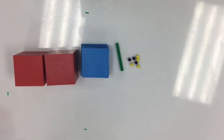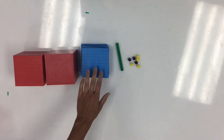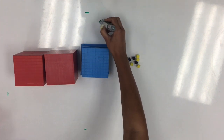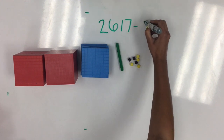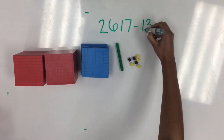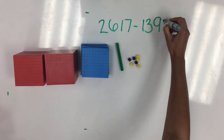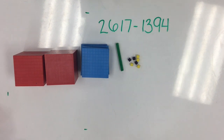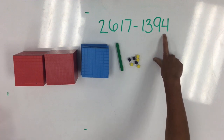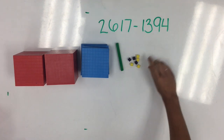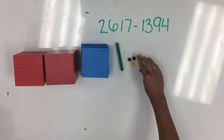Here we have another example where we need to exchange some of our hundreds for tens. I'm starting with 2,617 and I'm going to subtract 1,394. Remember, we're going to start in the ones place. It's asking me to take away 4 ones: 1, 2, 3, 4.